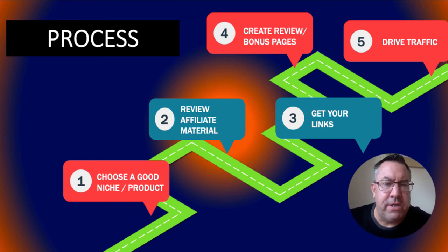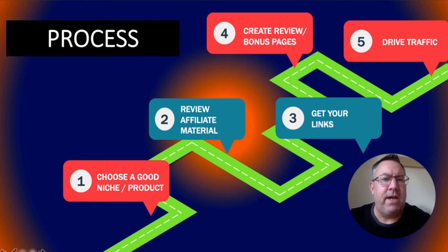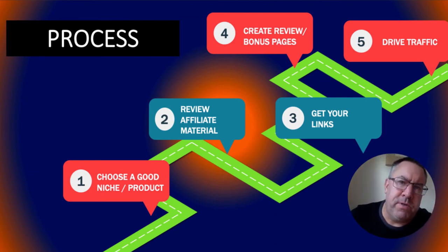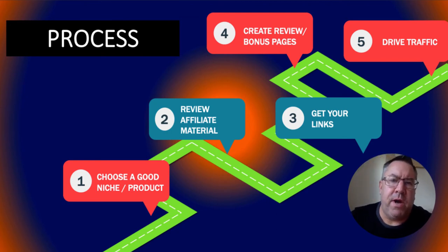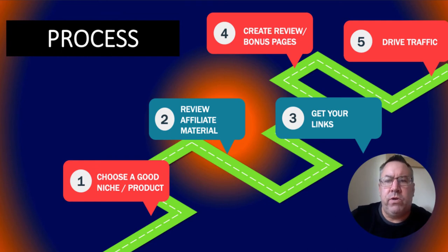Or you can just go and buy the product — if you're promoting it you should be interested in what you're promoting. Next, review the affiliate material: go to Munchie, grab that material, then get your links from JVZoo. Make sure you put some detail in before you apply for those links. Then create your review and bonus pages — whether that's a video review or bonus page. I'll leave a couple of videos below this one showing how I create my reviews and bonus pages. Lastly, you need to drive traffic.